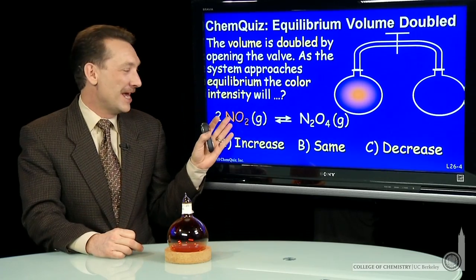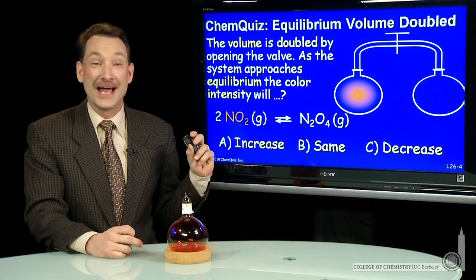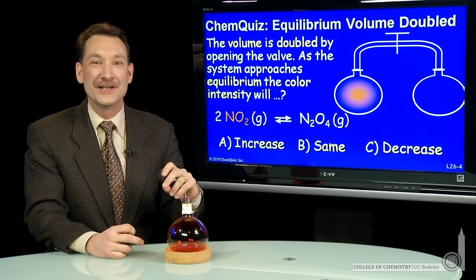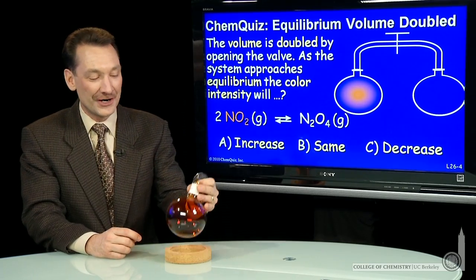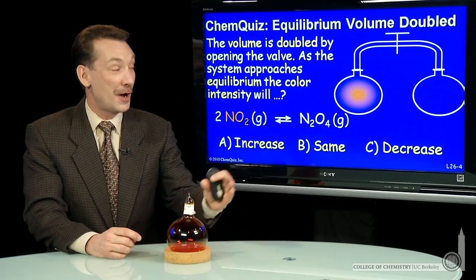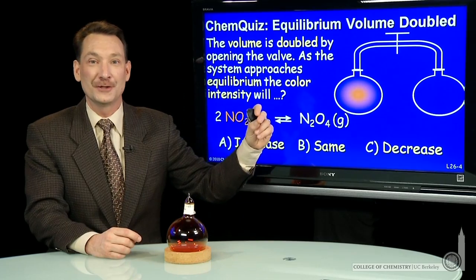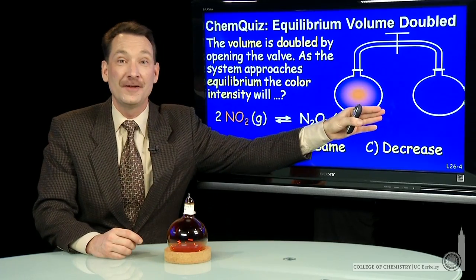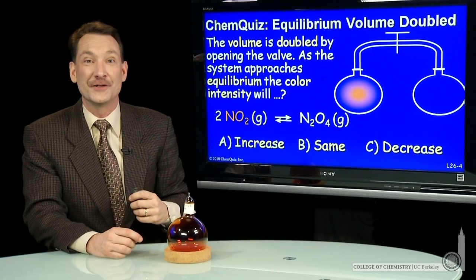Let's look at the equilibrium between NO2, a brown gas, and N2O4, a clear gas. Let's say I start, as I have it here, with a bulb of the equilibrium mixture. I open a valve and let it expand to twice its volume.